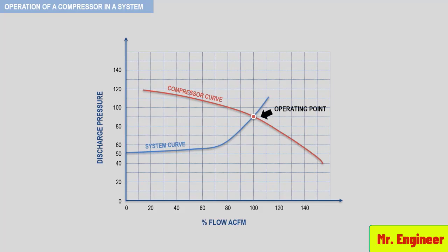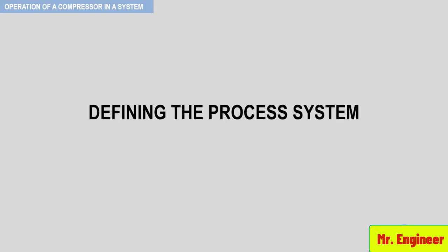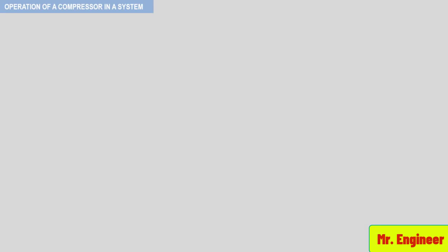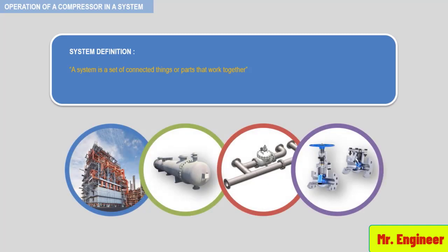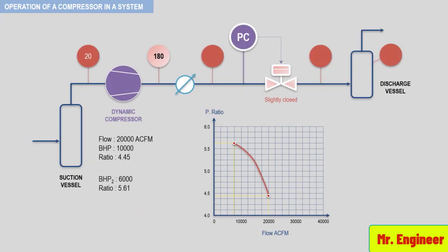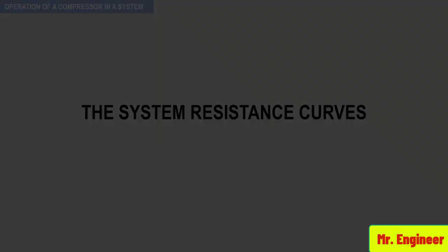For centrifugal compressors, both of these curves can change and will certainly do. The definition of a process system is a set of connected things or parts that work together. In our case, a set of components like vessels, exchangers, furnaces, control valves, and piping work together to produce a resistance to flow at the compressor flanges. The process system characteristics and the gas composition determine the head required by the process system. A simple process system schematic is presented here, and we will be using this simplified process schematic extensively in this course to illustrate many of the dynamic compressor concepts.